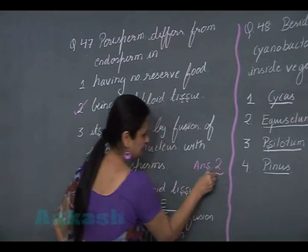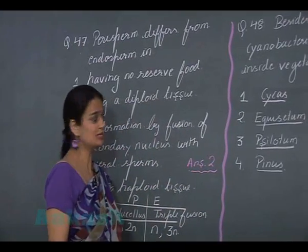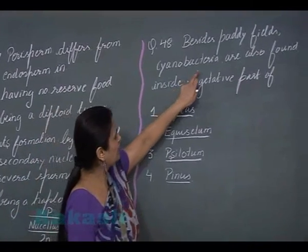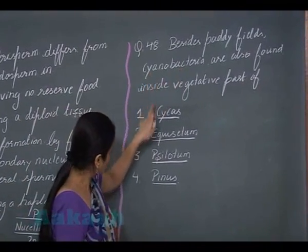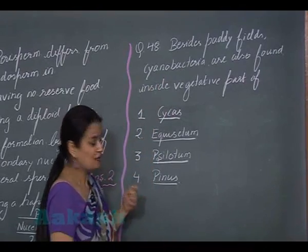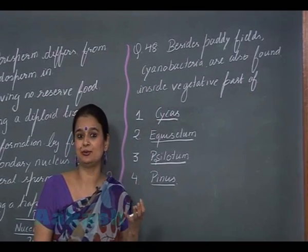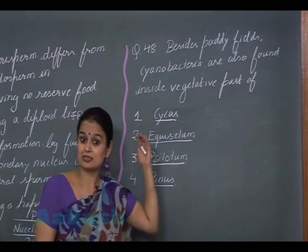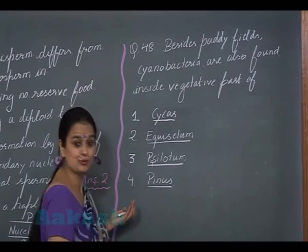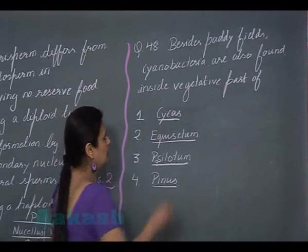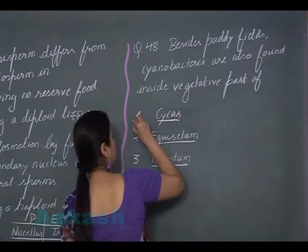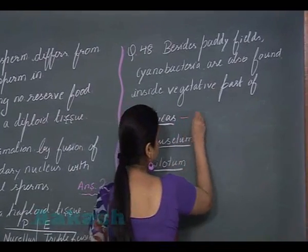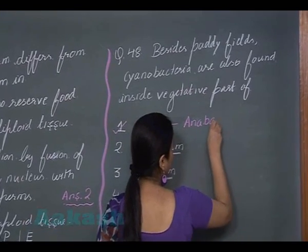Now for question number 48, we have to identify which of the four options contains an association with cyanobacteria (BGA). The answer is Cycas. The BGA associated with Cycas is Anabaena.